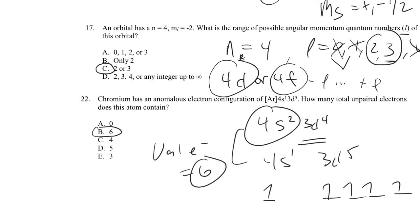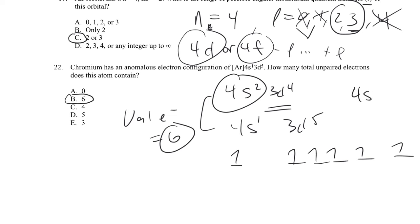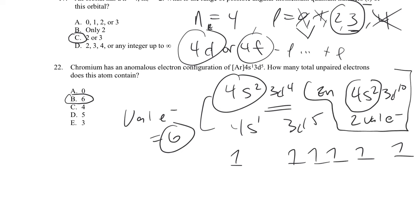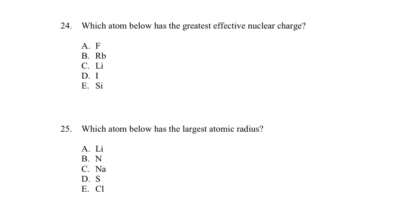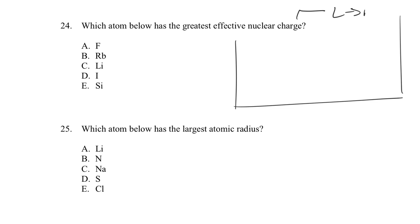Once we reach zinc with a 4S2, 3D10 configuration, the completely filled 3D subshell means we count only two valence electrons. Effective nuclear charge trends: the main trend that increases from left to right across the periodic table is effective nuclear charge. Going left to right, core electrons are primarily what shields nuclear charge, so increasing valence electrons leads to increasing effective charge.